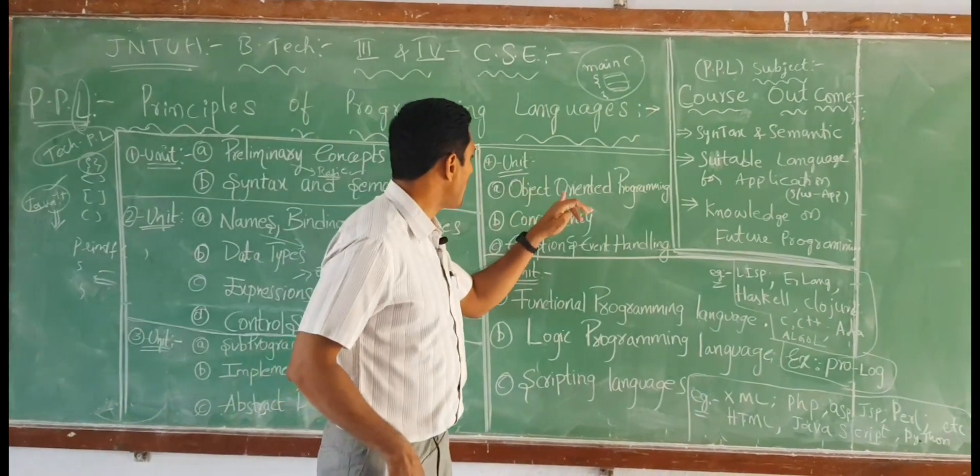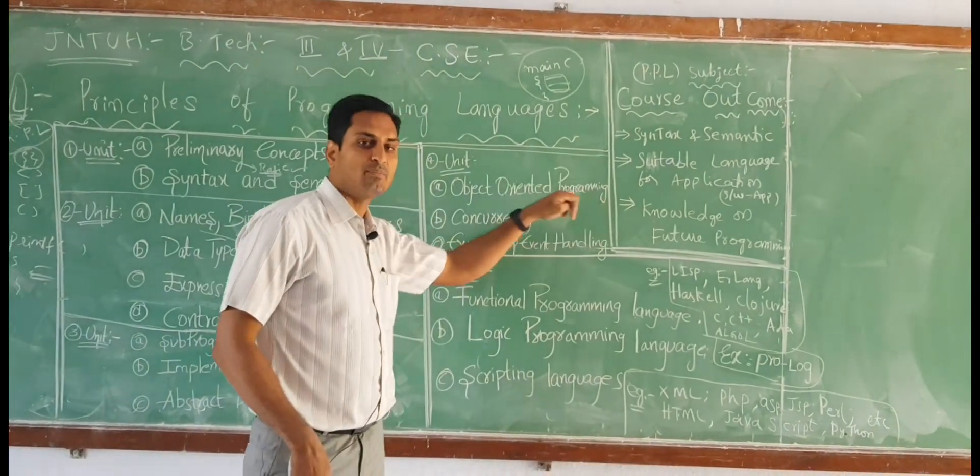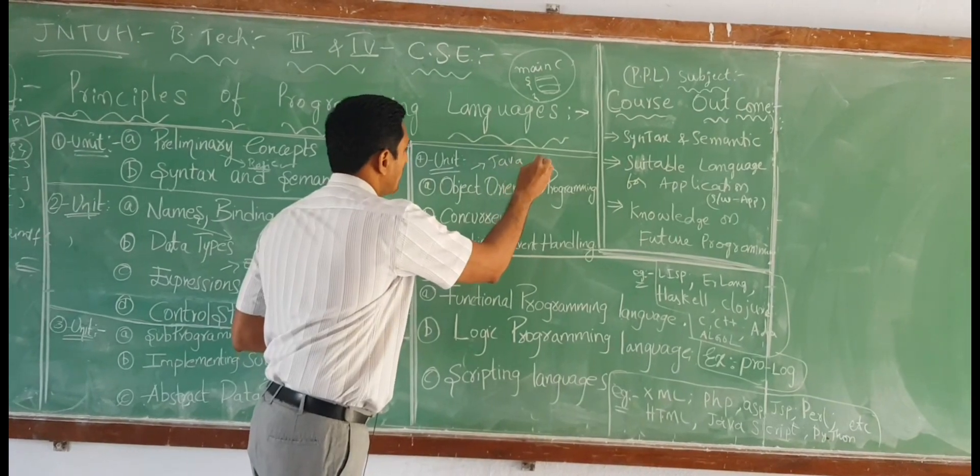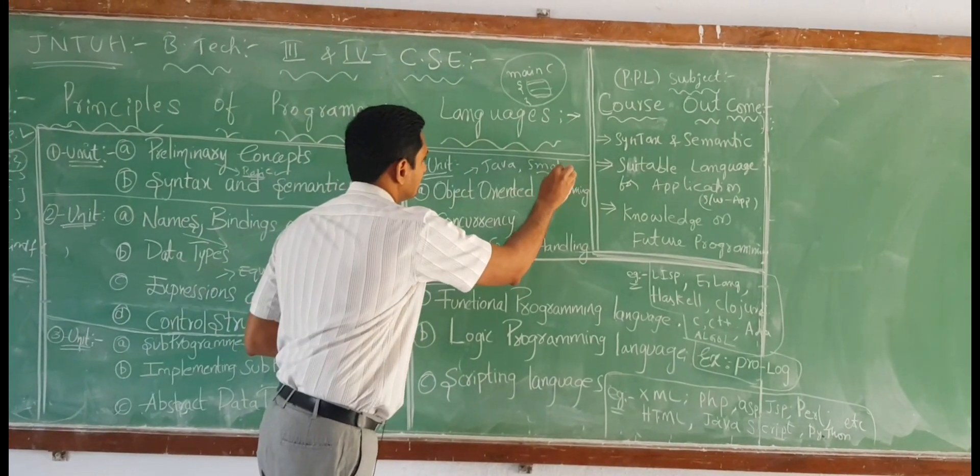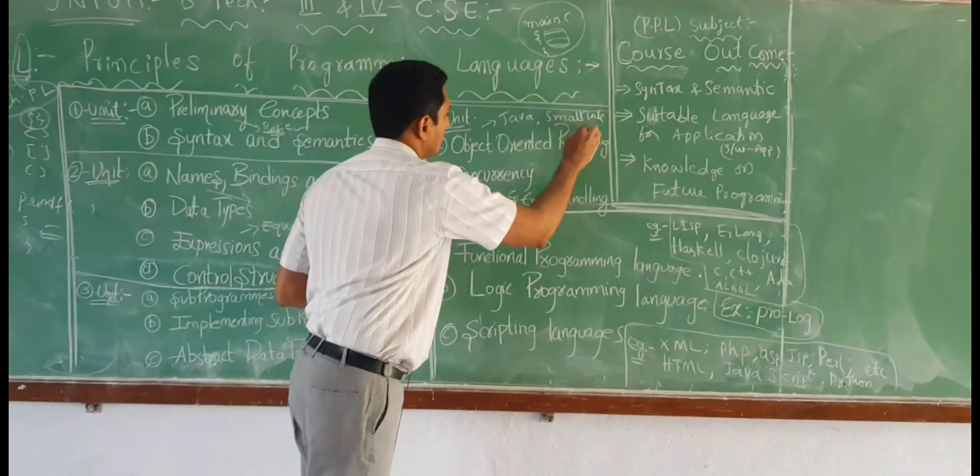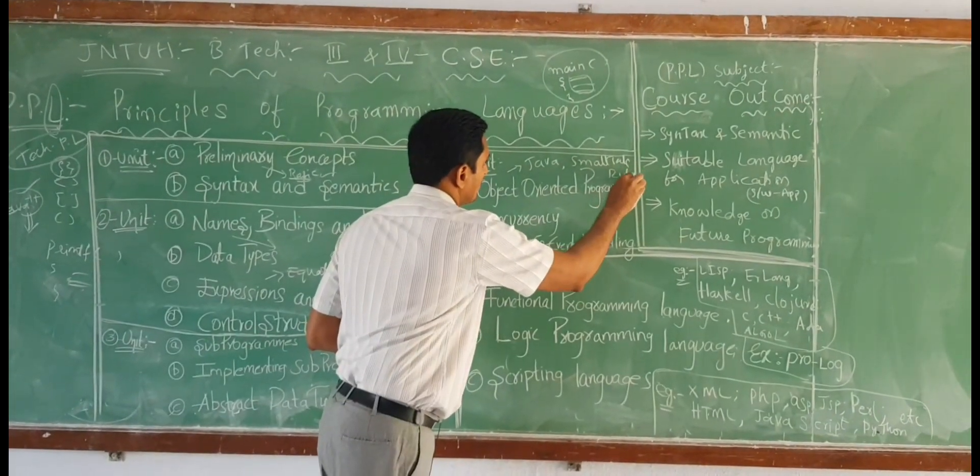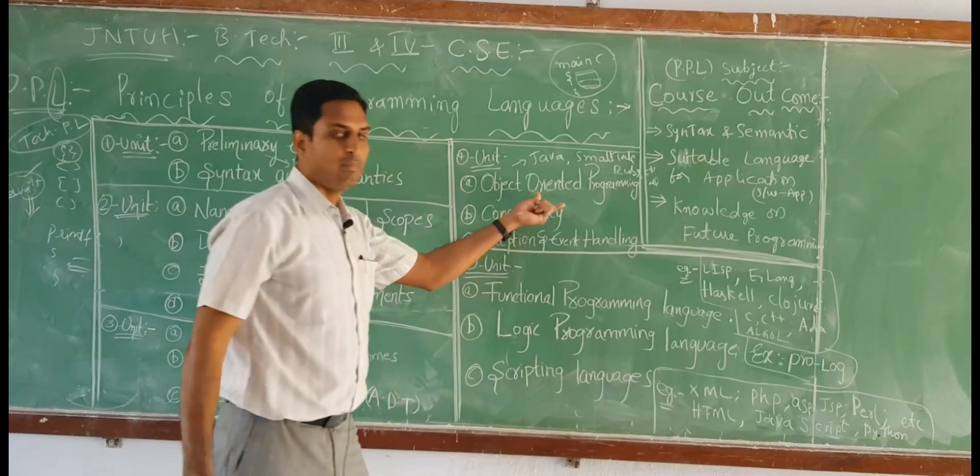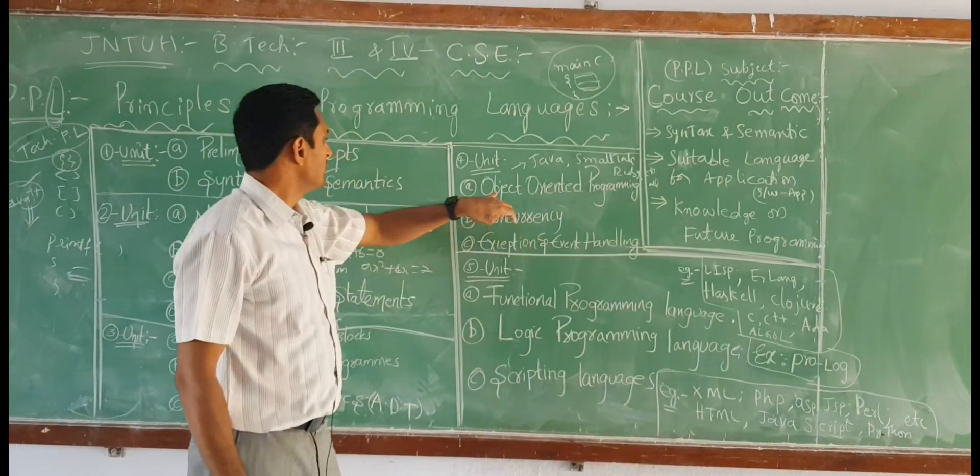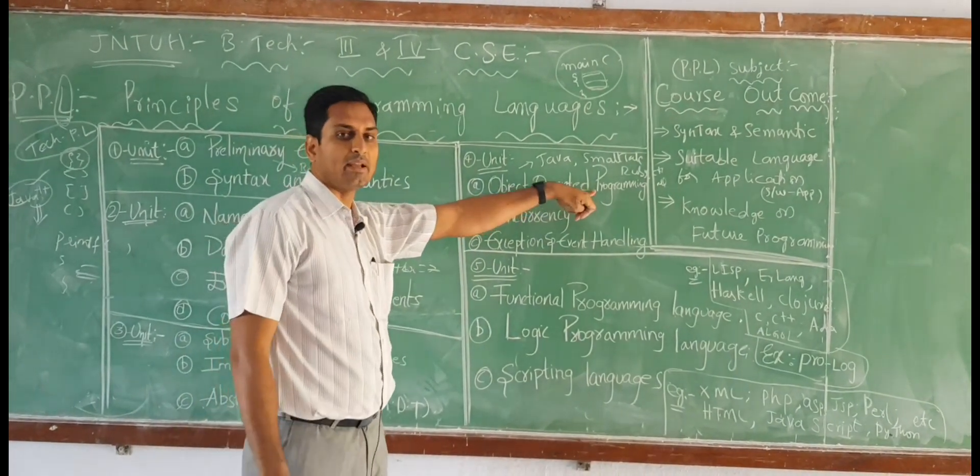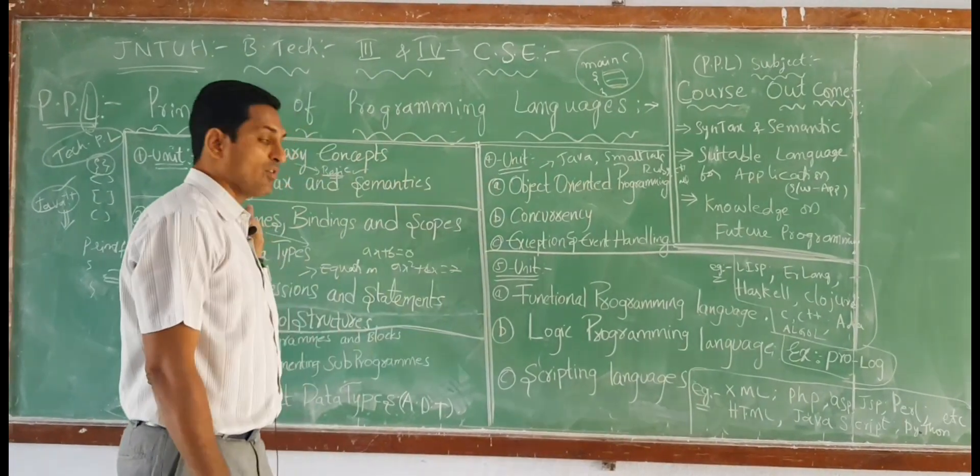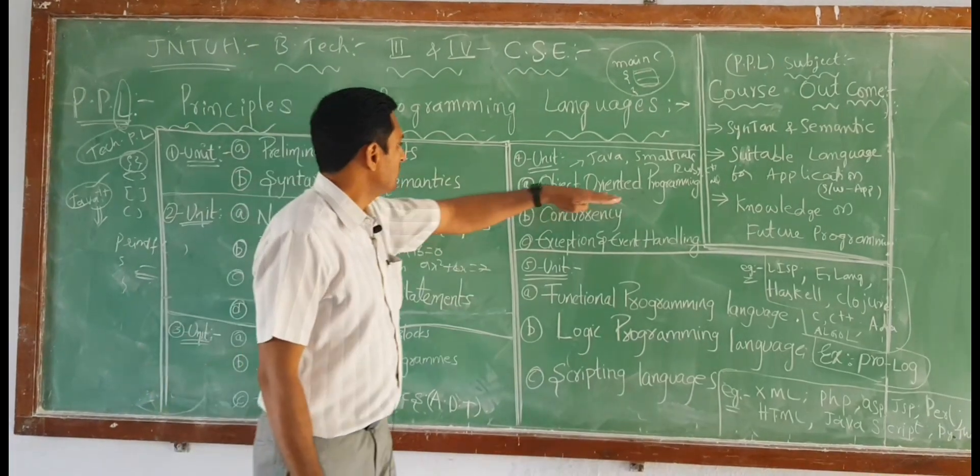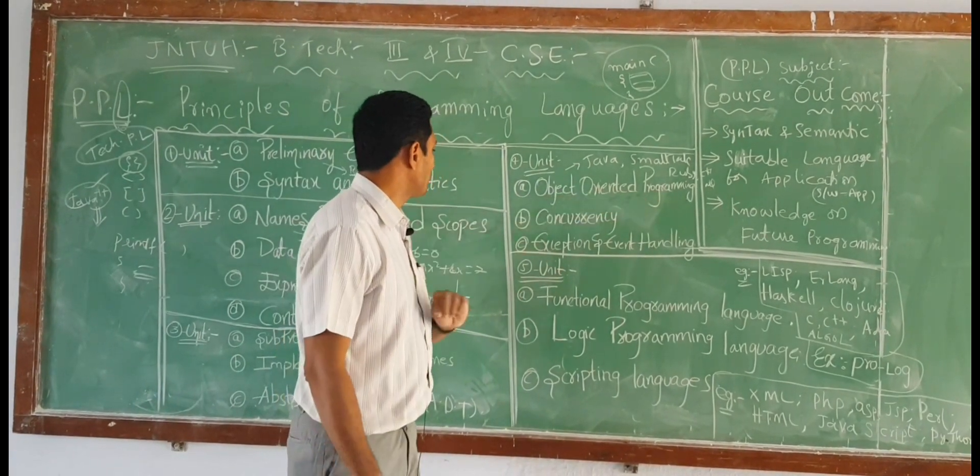Next in third unit we have object oriented programming. This we can implement in Java or Smalltalk, Ruby or C plus plus or dot net. We can implement OOPS concepts in these many object-related programming languages. Previously we have functional dependent, structure oriented, procedure oriented, now next generation is object oriented programming language.